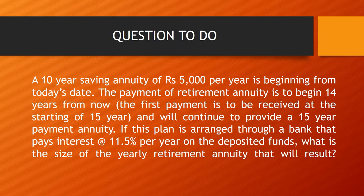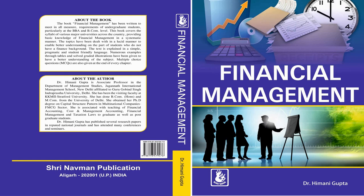Here is a practice question for you. A 10-year saving annuity of rupees 5,000 per year is beginning from today's date. The payment of retirement annuity is to begin 14 years from now. The first payment is to be received at the starting of year 15 and will continue to provide a 15-year payment annuity. If this plan is arranged through a bank that pays interest at 11.5% per year on deposited funds, what is the size of the yearly retirement annuity that will result? Don't forget to write your answer in the comment box. For further numericals, you can refer to the book Financial Management. Thank you.